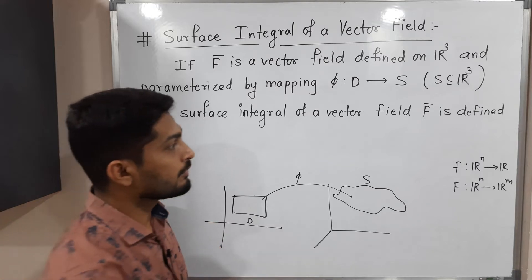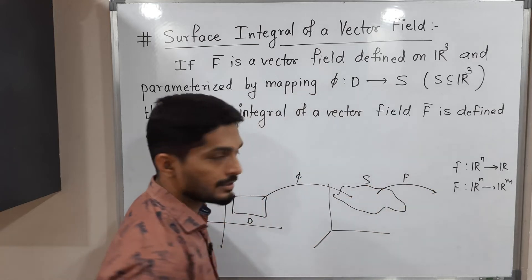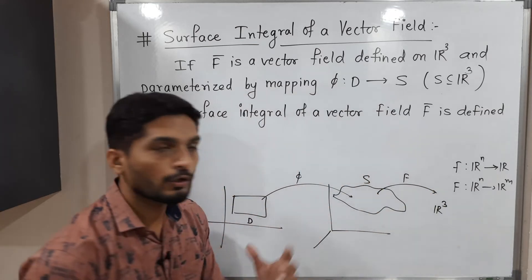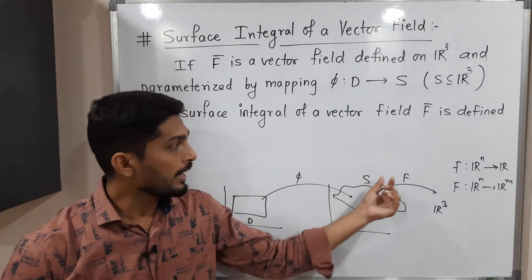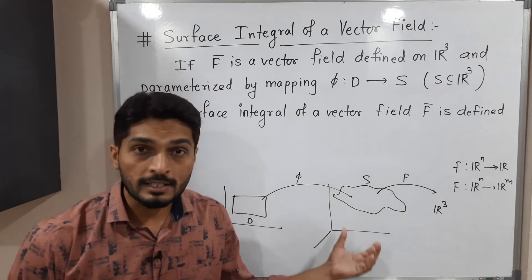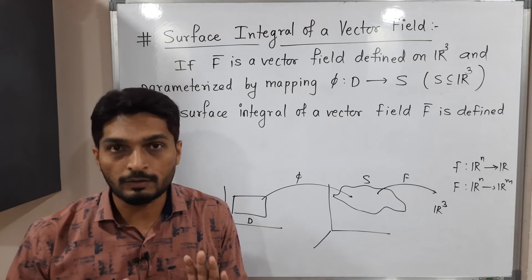And we have to find the surface integral of that vector field. That capital F is defined on this surface S which is from S to R3. So this scenario we have. So we have surface S is in R3. We have a vector field F which is defined on S. For that surface S, we have a parametrization phi which is defined on domain D.